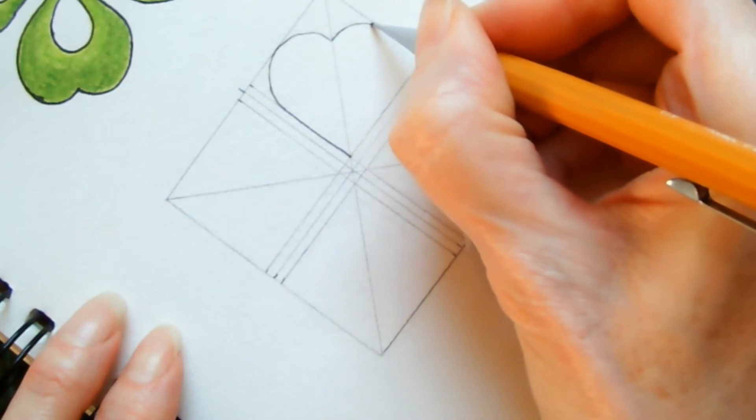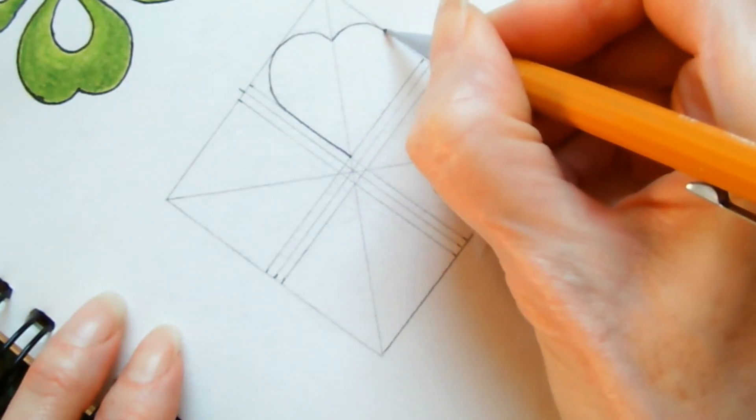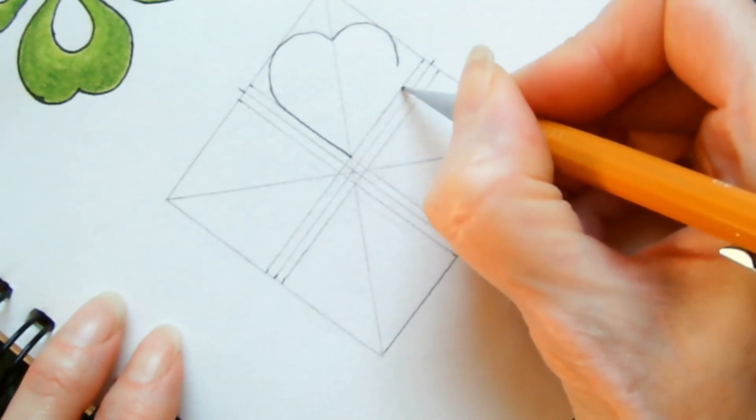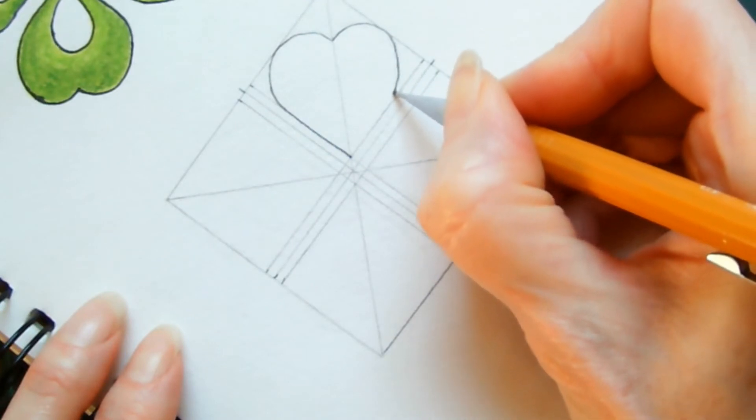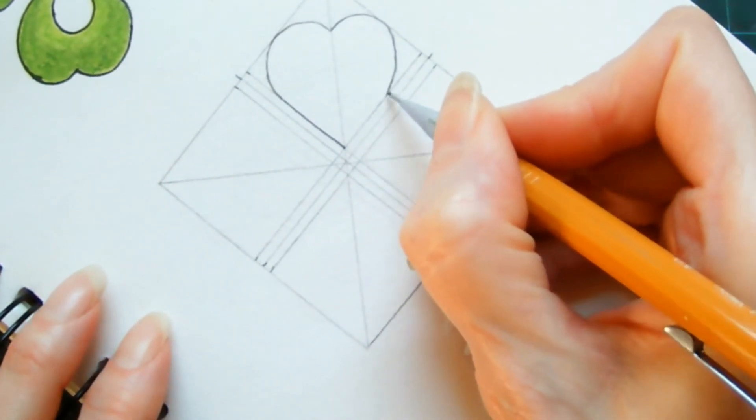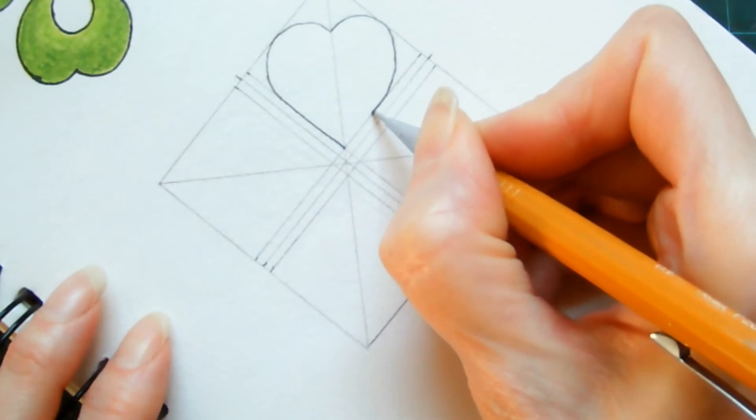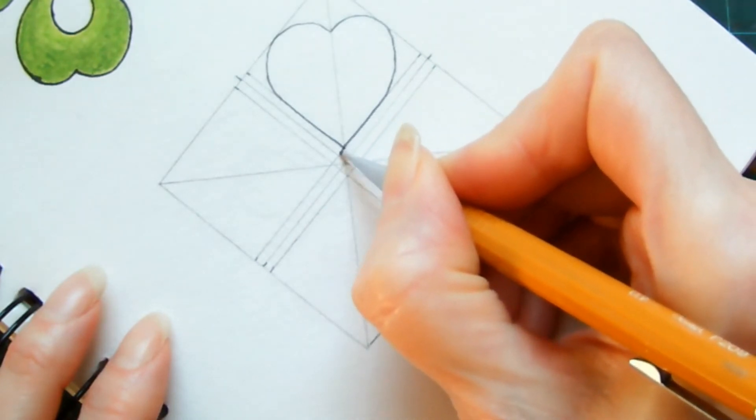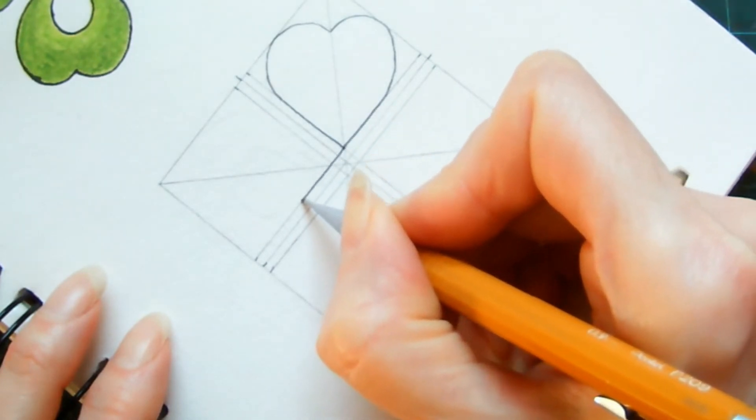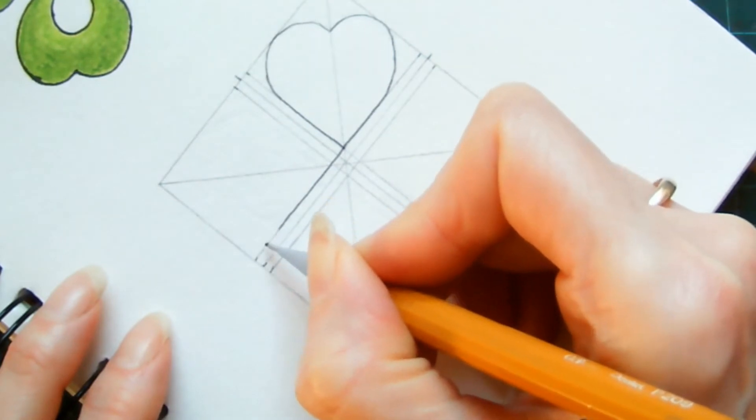And now you're going to bring that line all the way along this guideline past the line where you started to about just over two thirds along the way on this square.